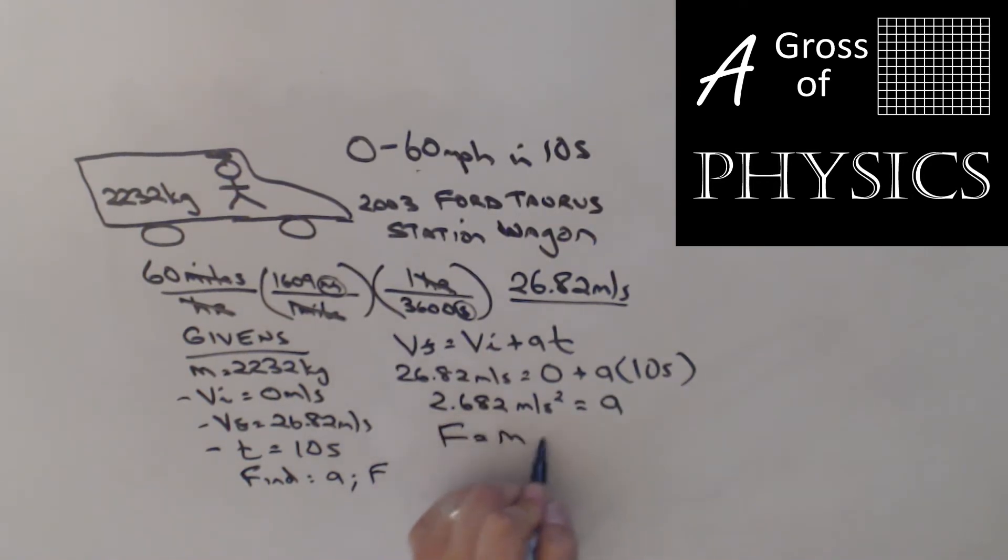And then I'm going to do F equals MA. F equals 2232 kilograms times 2.682 meters per second squared. So 2232 times 2.682 equals the force of my car in order to do an acceleration of 0 to 60 in 10 seconds, 5,986.2 Newtons. Now, of course, that's an average force, just like the acceleration is not actually constant the whole time because of gear shifting. And my Ford Taurus apparently looks like a cross between an Eagle and a post office truck. But the force with the data we have is about 6,000 Newtons.